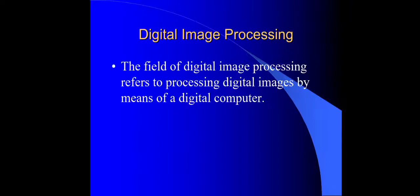What happens is that we take an image and apply enhancements. We already have an image, and then it will become an enhanced image. We can change the color intensity, we can change the brightness, we can change the background, we can change the color — the way we change the image is basically called processing.